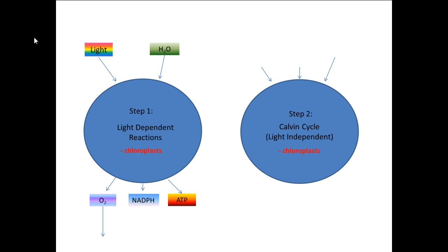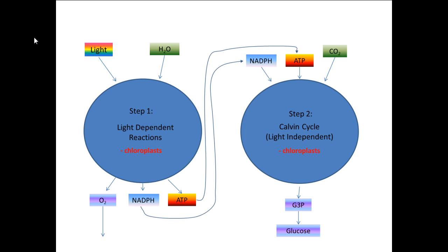So we have three inputs into the Calvin cycle. NADPH is going to come from the first step, and the ATP generated in the first step is going to be used in the second step. This is where we use carbon dioxide. We have one output of the Calvin cycle, and that's G3P. G3P can then be converted into glucose or any of the other macromolecules that the plant needs to survive.